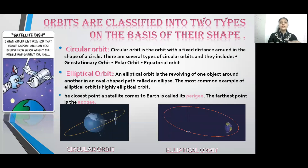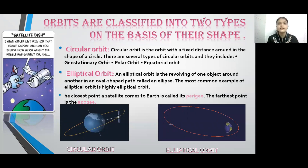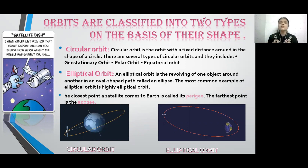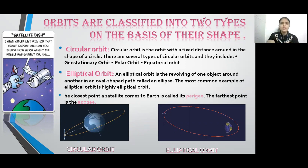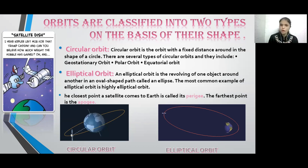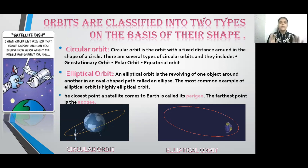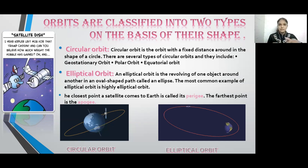Next, we look at the types of shapes that orbits form. In a circular orbit, we can imagine a circle with the Earth at the center — the satellite revolves along the edge, maintaining the same distance from Earth at every point. Circular orbits are of three types: geostationary orbit, polar orbit, and equatorial orbit. In elliptical orbits, the satellite does not maintain a fixed distance — it has two points: the farthest point and the closest point relative to the planet.